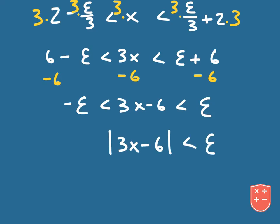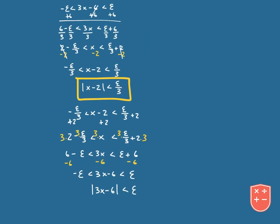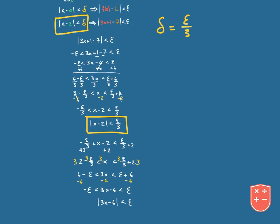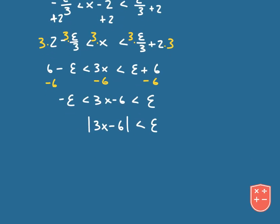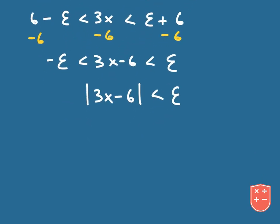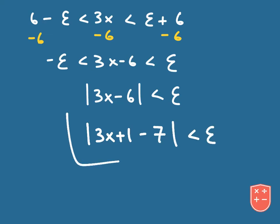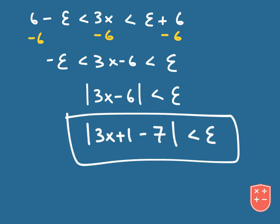Even though this isn't the exact same thing as what we started with, I can rewrite this as the absolute value of 3x plus 1 minus 7 is less than epsilon. And we've arrived at our answer.